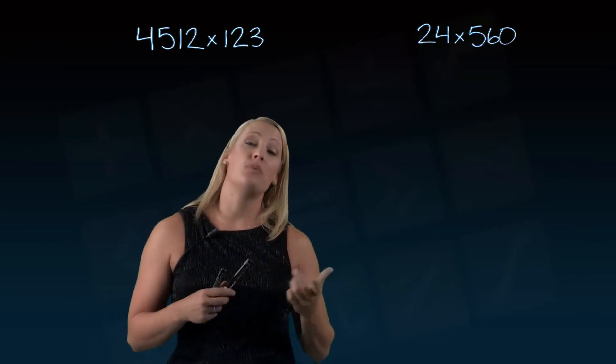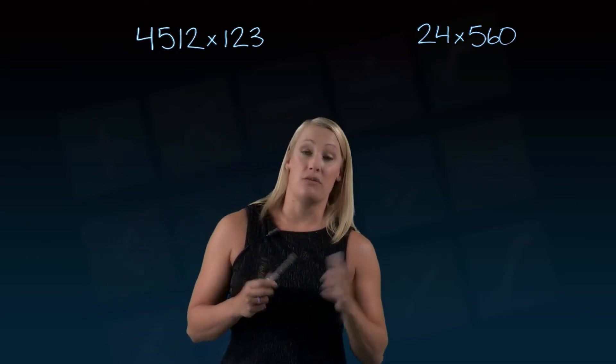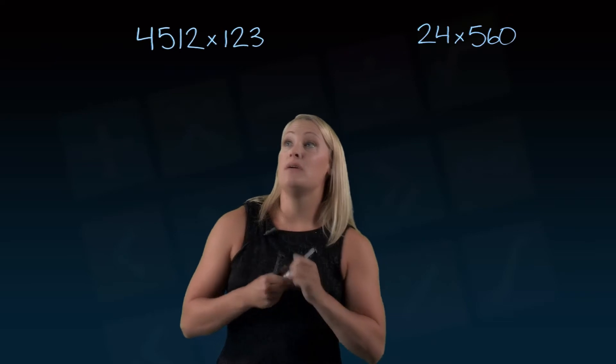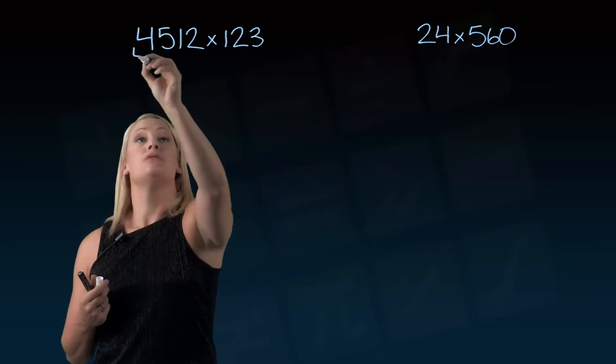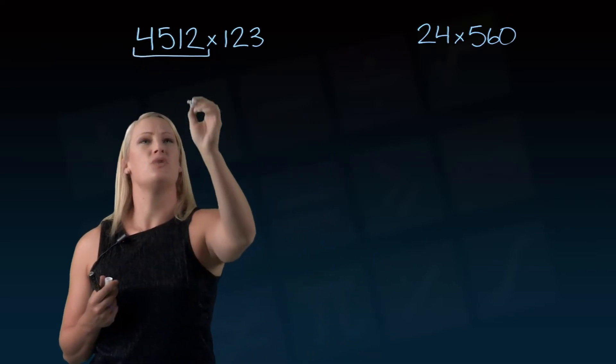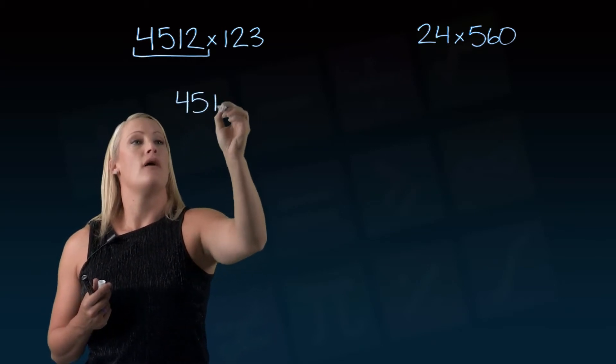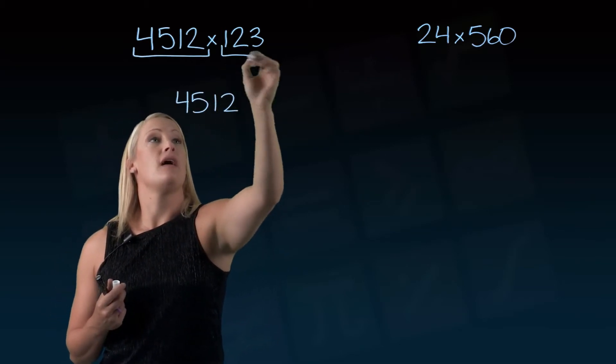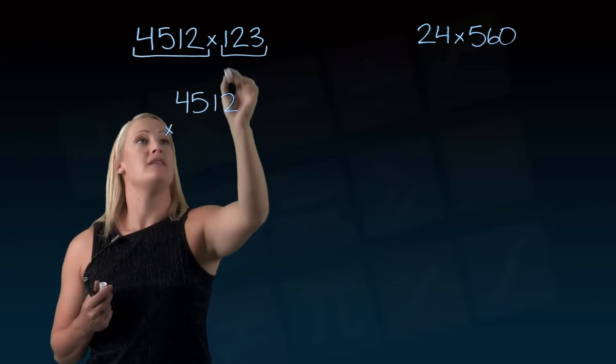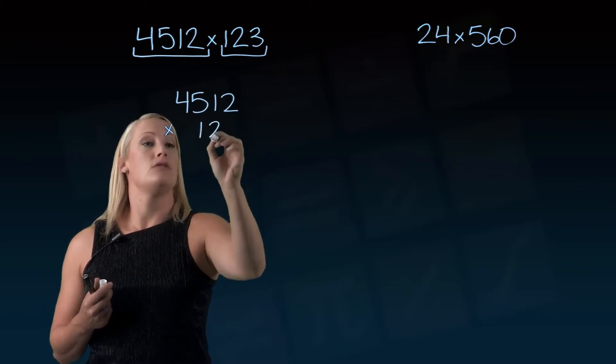4512 multiplied by 123. What we tend to do is take the larger of the two, so in this case that's got four digits, and we're going to put that one on the top. So 4512, and then this guy is going to be multiplied down on the bottom, 123.